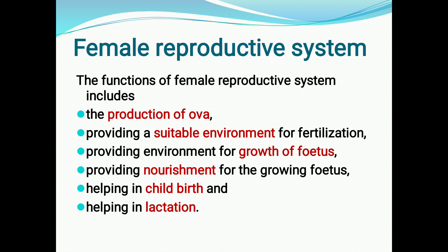Let's first discuss the female reproductive system. It helps in the production of ova, the female egg cell, which is released from the ovary during ovulation. The female reproductive system provides a suitable environment for fertilization and also provides an environment for the growth of the fetus for a period of 10 months.